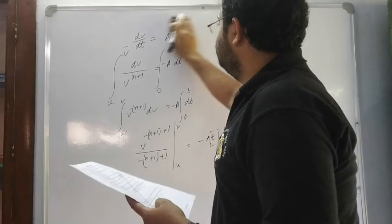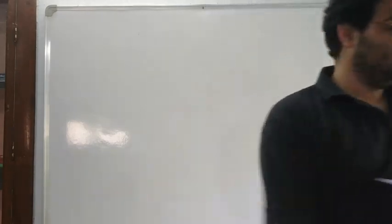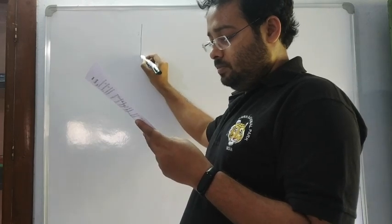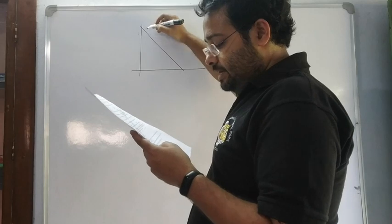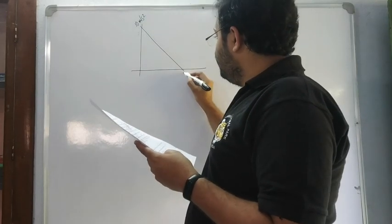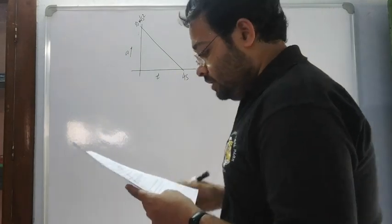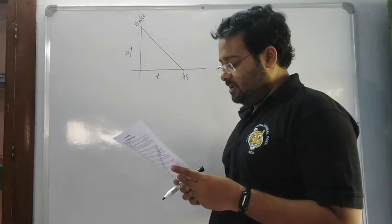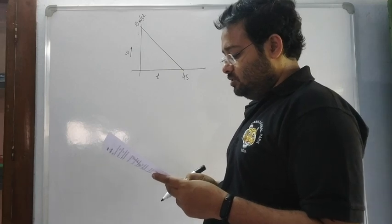Problem 28. We have a straight line graph: 10 meters per second squared on the acceleration axis, and 4 seconds on the time axis. The acceleration of a particle moving along a straight line varies with time as shown. At what time does the particle acquire its initial velocity again?